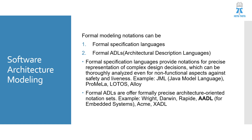Formal modeling notations include formal ADLs and formal specification languages. Formal specification languages provide notations for precise representation of complex design decisions, which can be thoroughly analyzed even for non-functional aspects against safety and liveness properties. Examples include JML (Java Modeling Language), Promela, Lotos, and Alloy. Formal ADLs offer formally precise architecture-oriented notation sets; examples include Wright, Darwin, Rapide, AADL — which is used for embedded systems — Acme, and xADL.